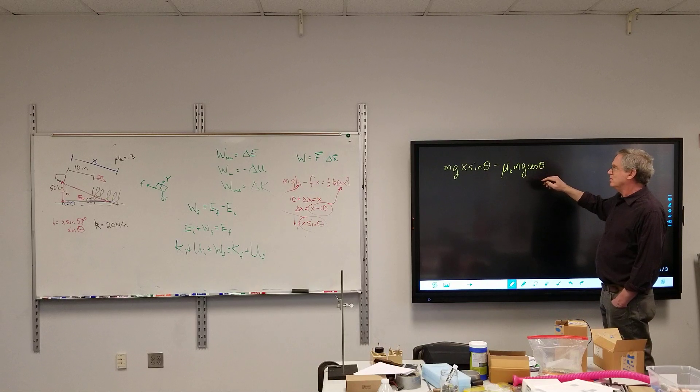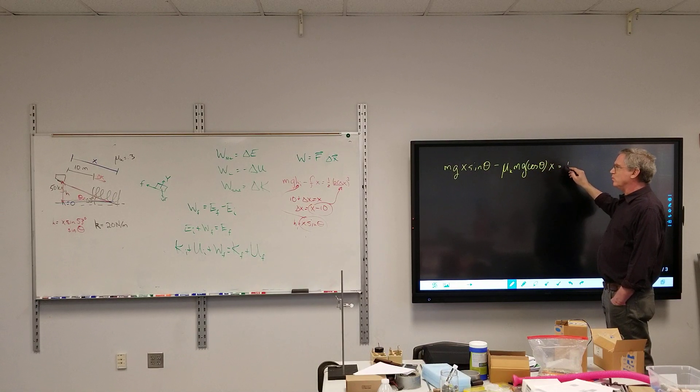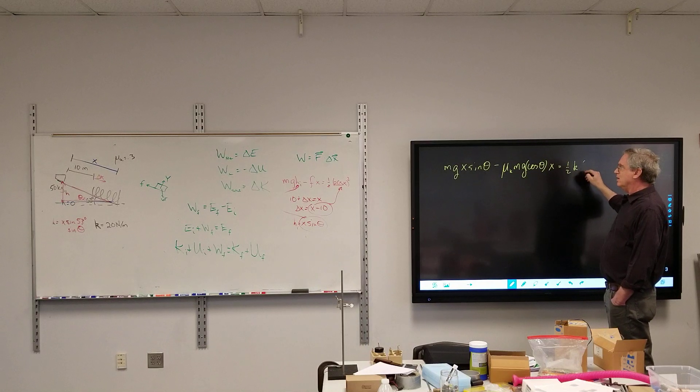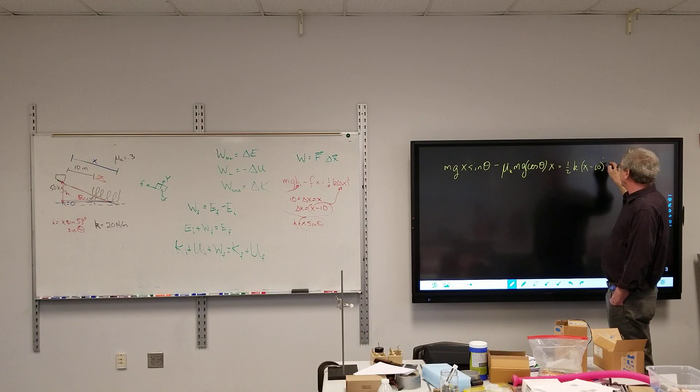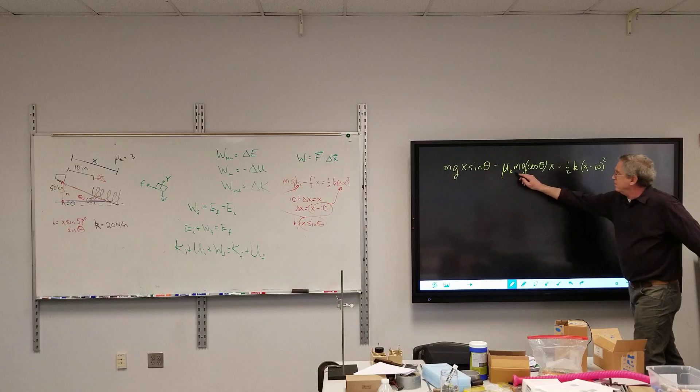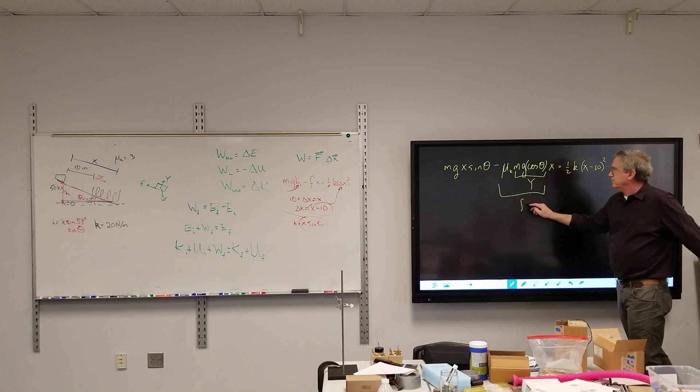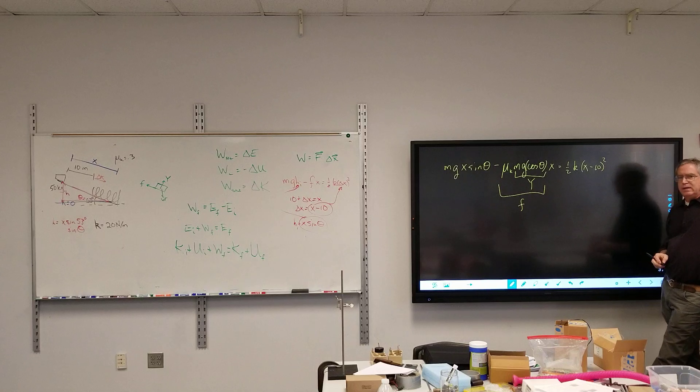Times x equals one half a x minus 10 squared. Is that x connected to mg cosine theta? Like for y? Yeah, that's y right there. That's the friction right there. Equals one half a x minus 10.